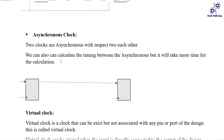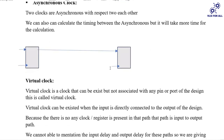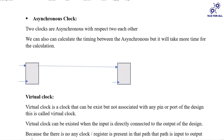Asynchronous clocks: two clocks are asynchronous with respect to each other, meaning they do not share the same clock period and are not connected to the same clock source. They have different clock sources C1 and C2. We can calculate timing between the two asynchronous clock cells, but it takes more processing — it is like dynamic timing analysis.